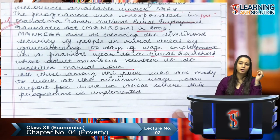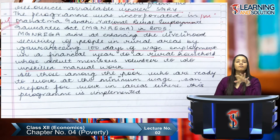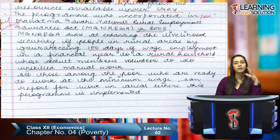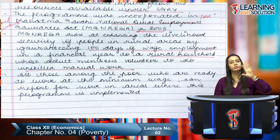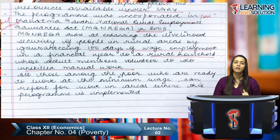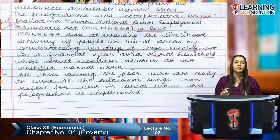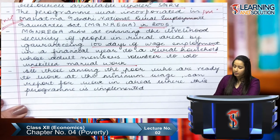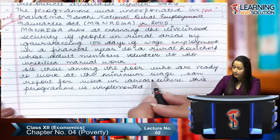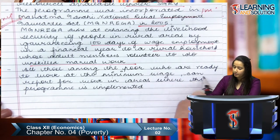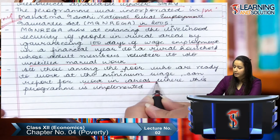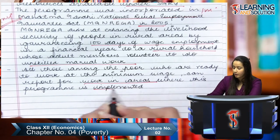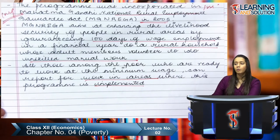The MGNREGA aims at enhancing the livelihood security of people in rural areas by guaranteeing 100 days of wage employment in a financial year to rural households whose adult members volunteer to do unskilled manual work. Under this act, if the government cannot generate employment, it is responsible for paying the wages for those 100 days.